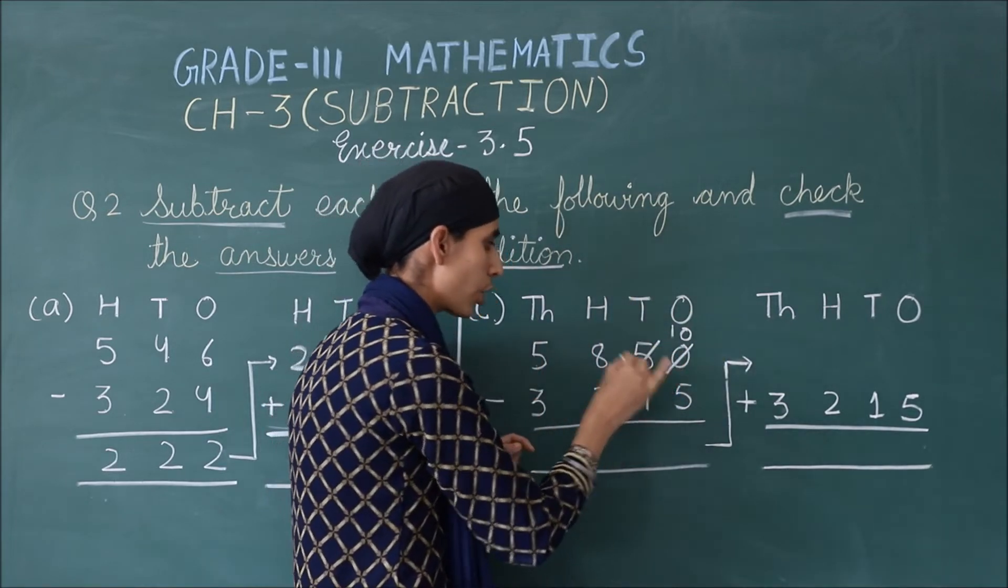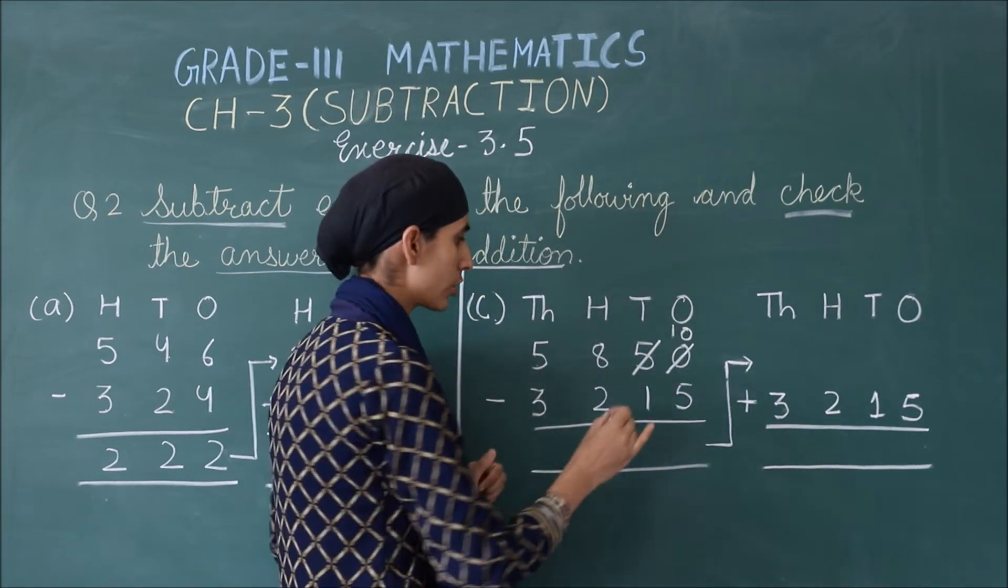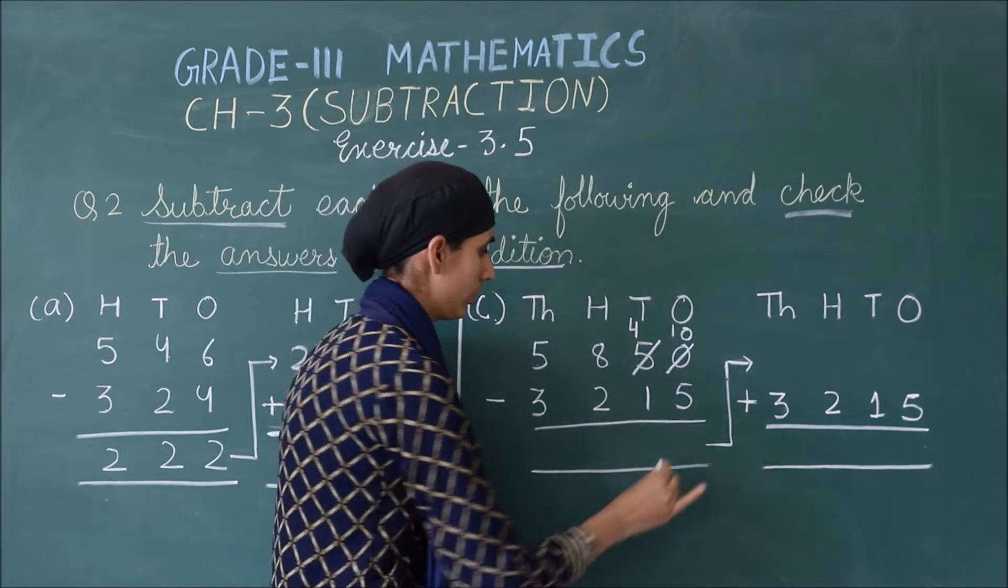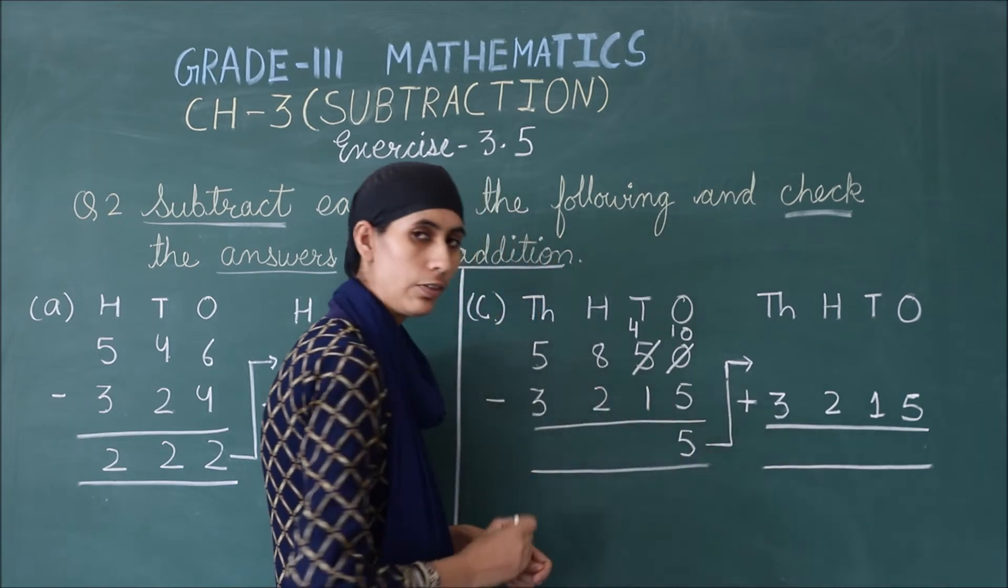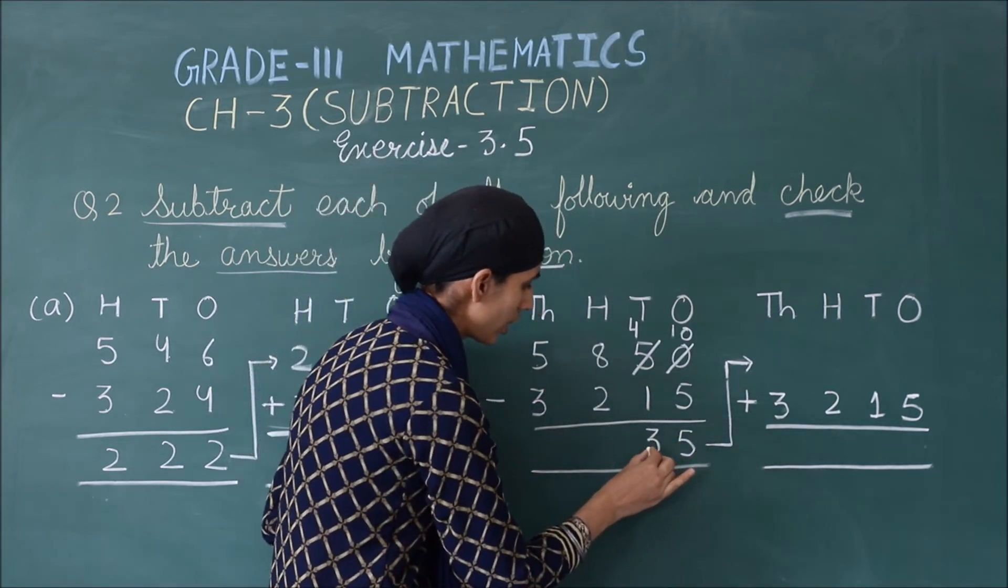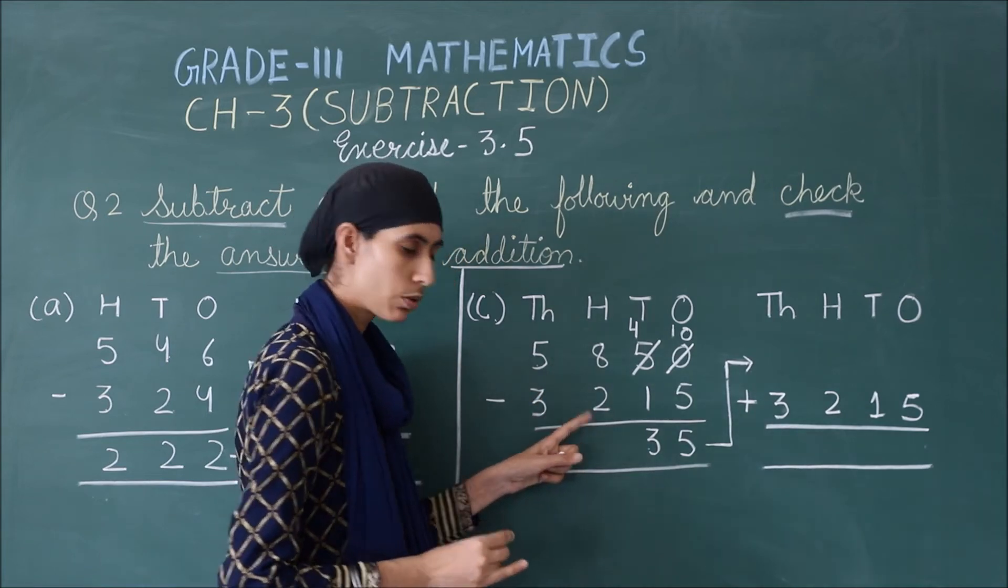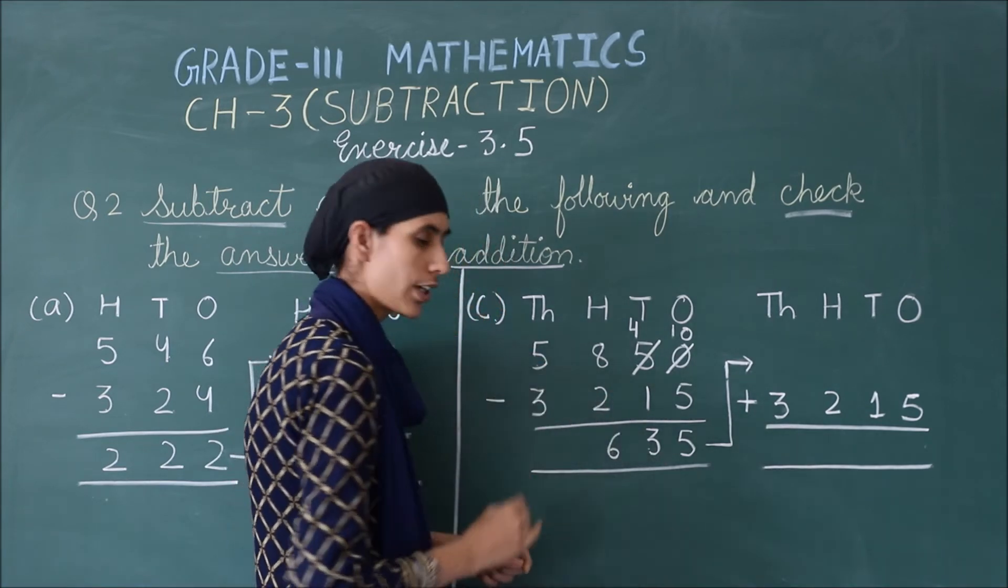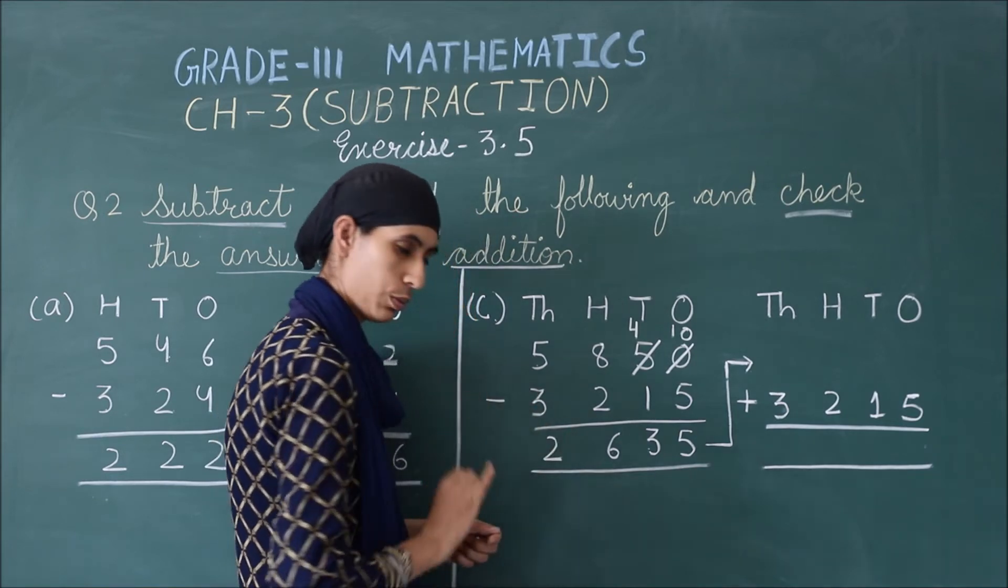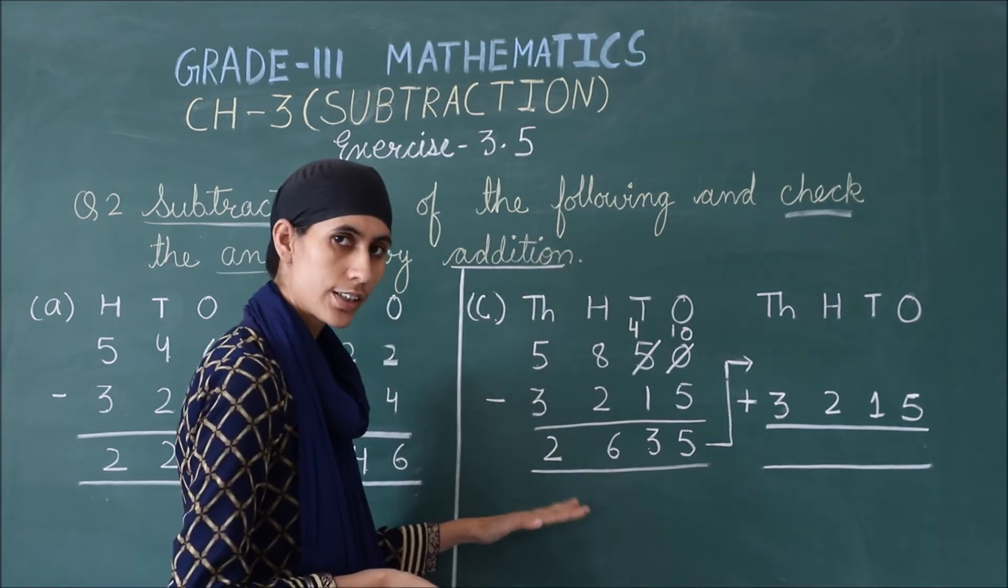And we have borrowed from 5, so we have 4. So 10 minus 5 is 5, then 4 minus 1, 3, 8 minus 2, 6, 5 minus 3, 2. So my answer for subtraction is done.